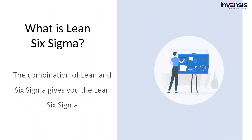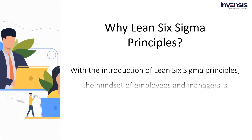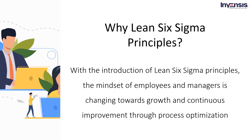Lean Six Sigma combines the best of both worlds. The combination of both these methodologies gives you the Lean Six Sigma principles that help improve process efficiency and quality. Not only does it reduce process errors and waste, it also provides a framework for overall change in corporate culture. With the introduction of Lean Six Sigma principles, the mindset of employees and managers is changing to one geared towards growth and continuous improvement through process optimization.